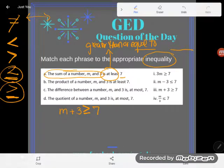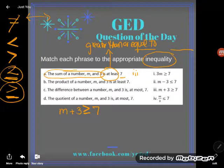So the sum of a number M and 3 is at least 7 is the same as M plus 3 is greater than or equal to 7. So A matches with 3. Great.